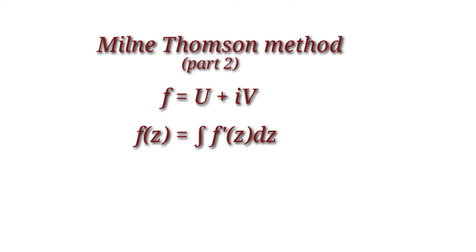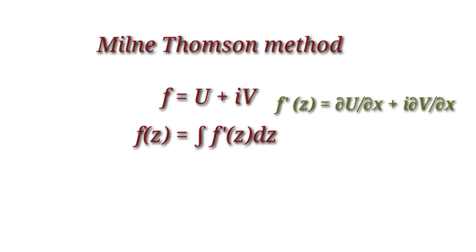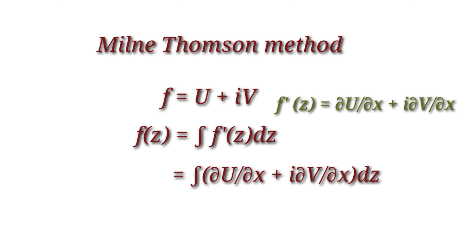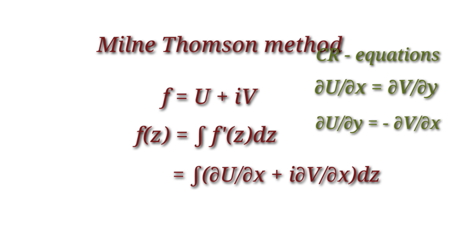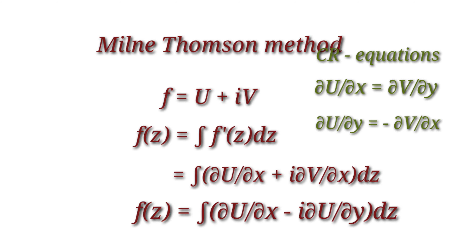We have f'(z) = ∂u/∂x + i·∂v/∂x. So f(z) = integral of (∂u/∂x + i·∂v/∂x) dz. If u is given, we can find ∂u/∂x and ∂u/∂y. So we have to replace ∂v/∂x in terms of partial derivatives of u by using the Cauchy-Riemann equations. By CR equations, ∂v/∂x = −∂u/∂y. So f(z) = integral of (∂u/∂x − i·∂u/∂y) dz.